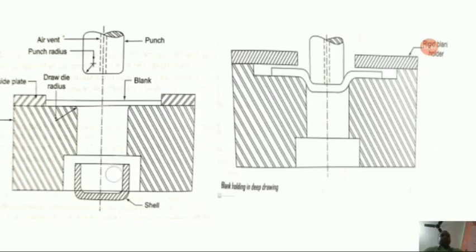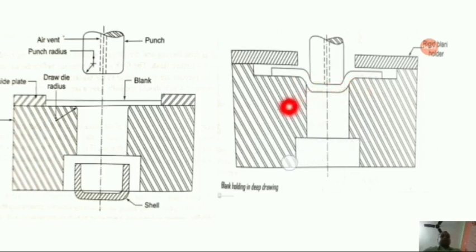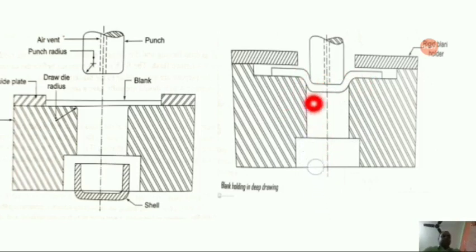The blank is first kept on the die plate and then the punch slowly descends on the blank and forces it to take the cup shape, formed by the end of the punch, by the time it reaches the bottom of the die, totally forming a cup.